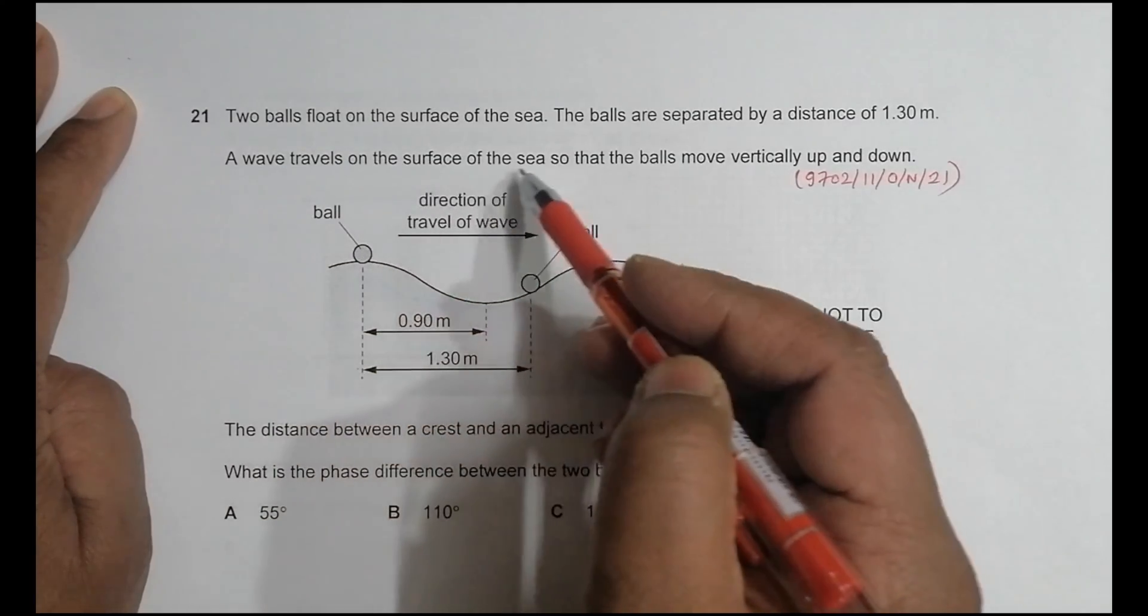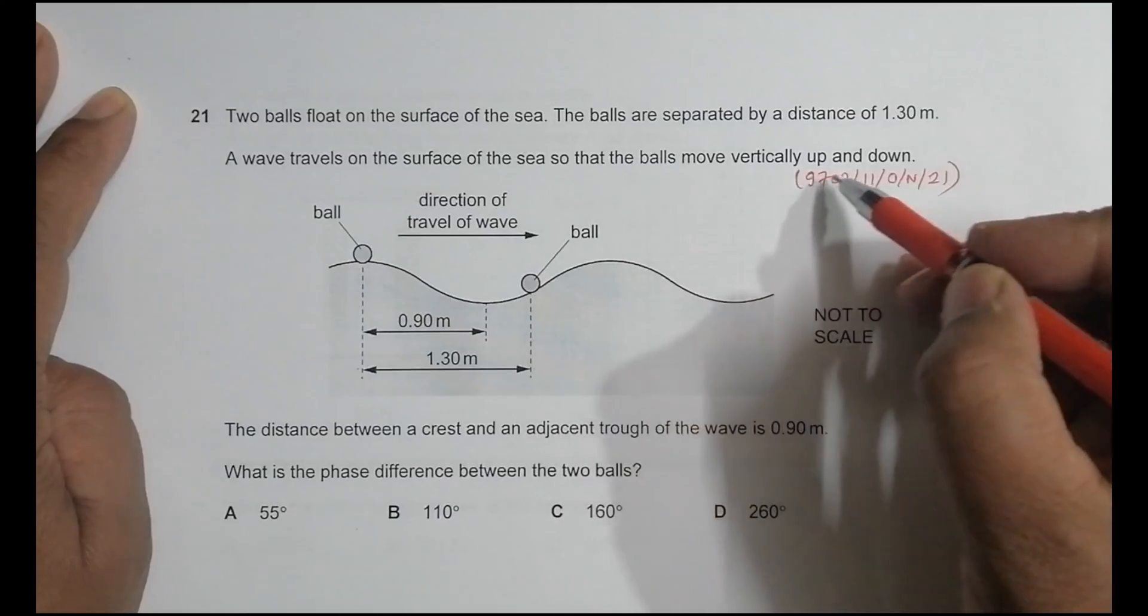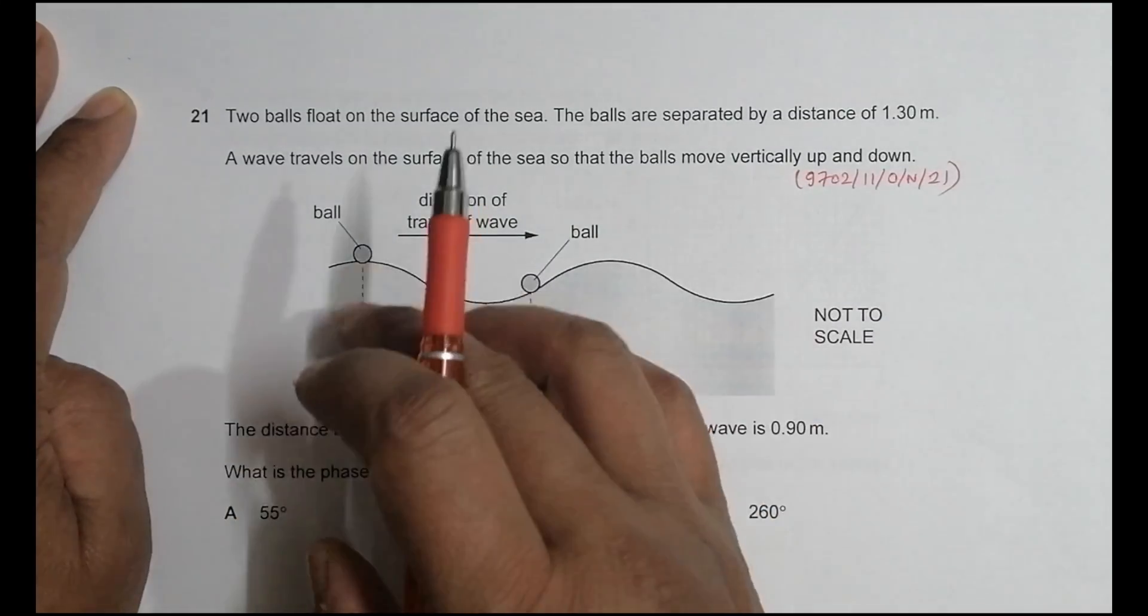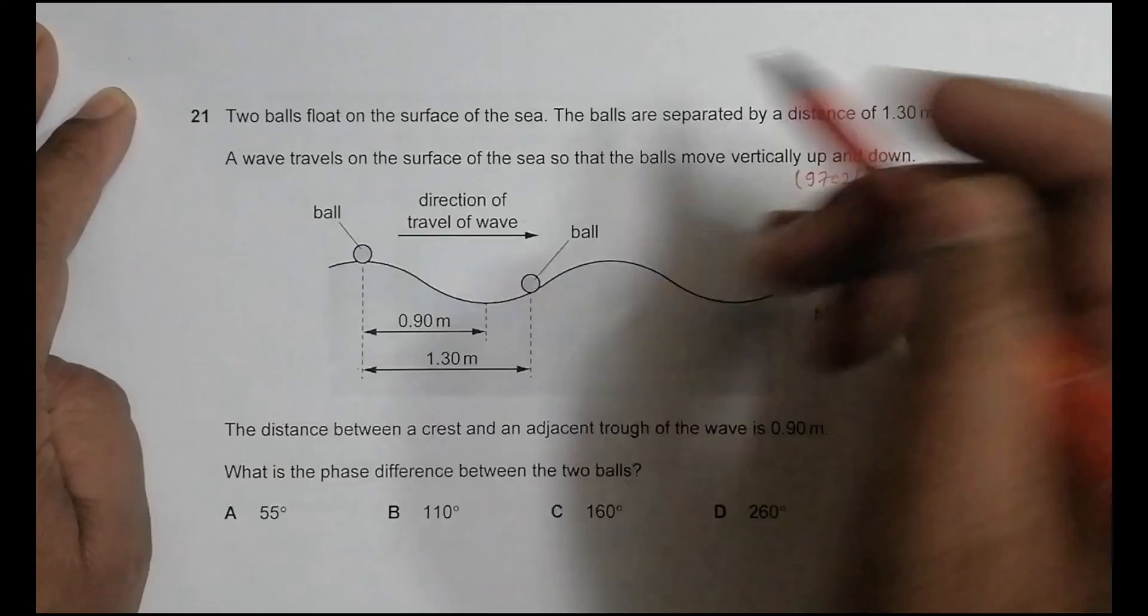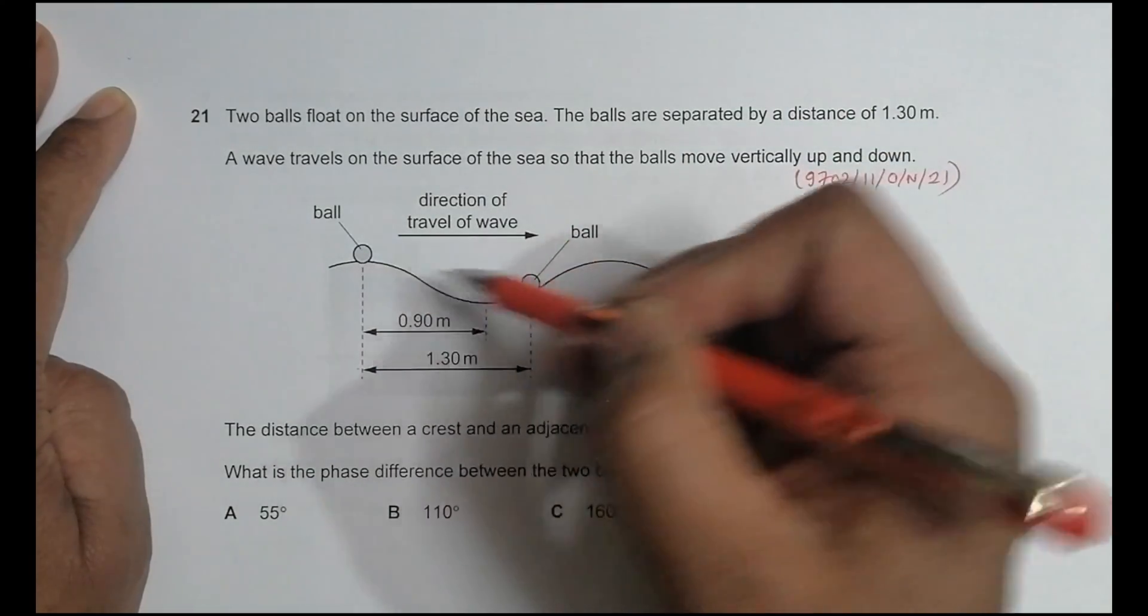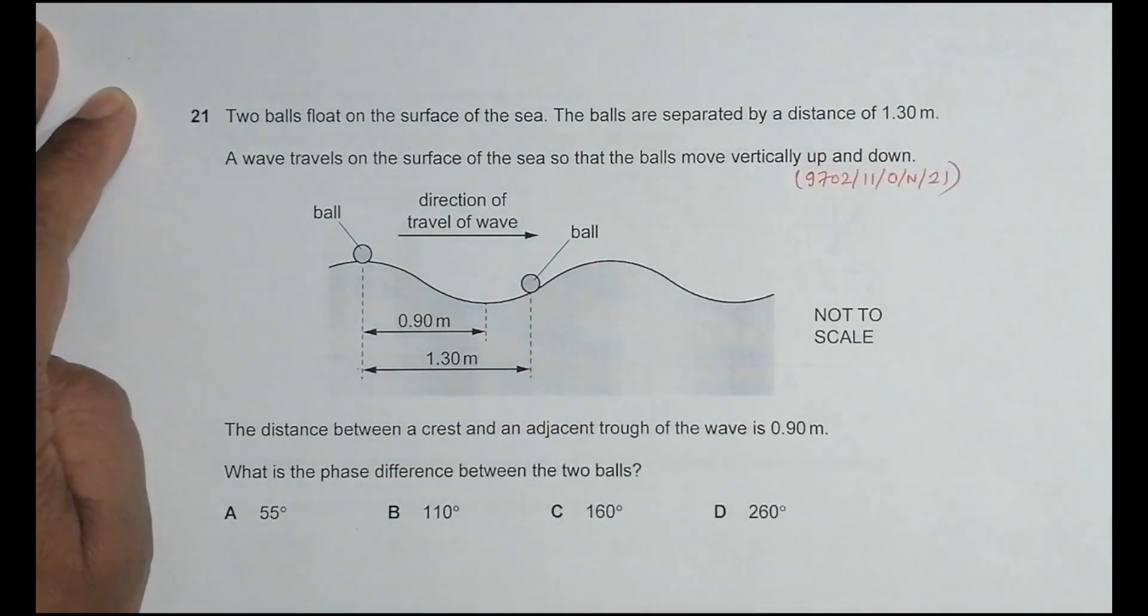A wave travels on the surface of the sea so that the balls move vertically up and down. So as the waves go like this, the ball moves up and down like this. So this is almost at the top, here bottom, here top, bottom and so on.